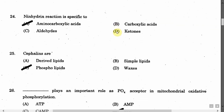The next question is: Ninhydrin reaction is specific to — Option A: Amino carboxylic acids. Option B: Carboxylic acids. Option C: Aldehydes. Option D: Ketones. The correct answer is Option A, that is amino carboxylic acids.